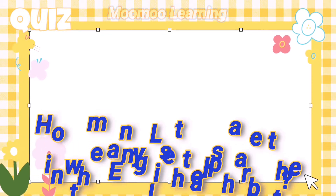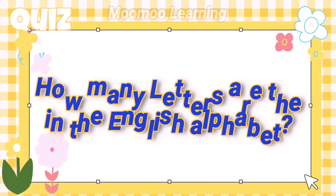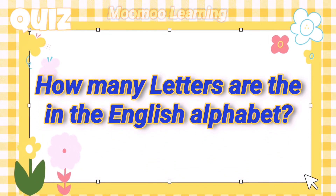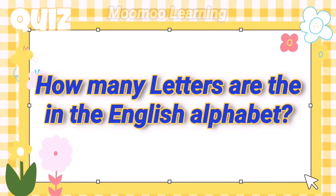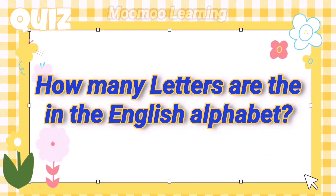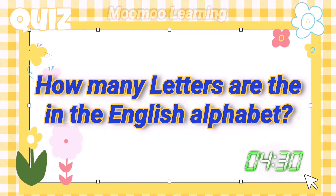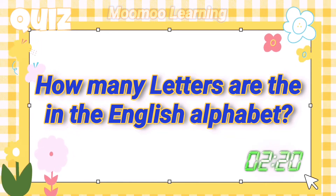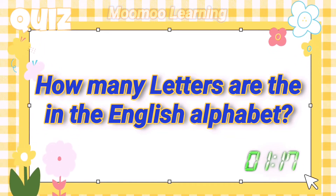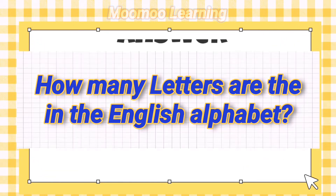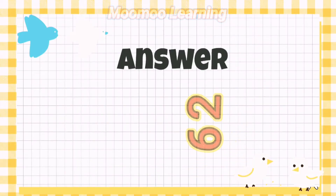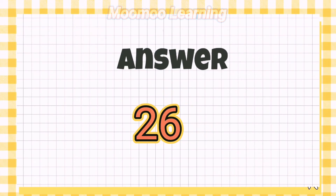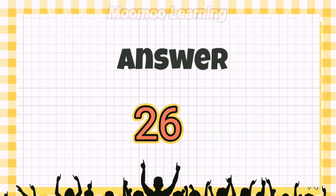How many letters are there in the English alphabet? Answer: 26.